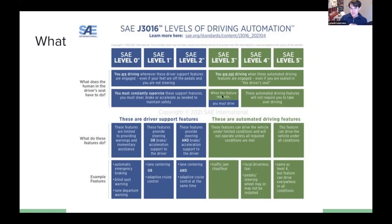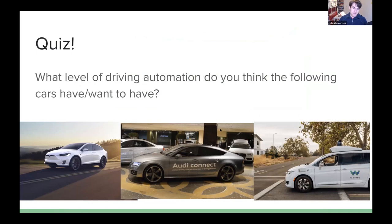Then there's level three, from where you're not responsible anymore — you can go read a book. Sometimes the car might say it doesn't know what to do and you must take over. In levels three and four there are limited conditions in which you can drive, such as limited to specific highways or traffic jams. In level four, there's never any moment where you have to intervene and take over the steering wheel. So after hearing this, I've got a quiz — what level of driving automation do the following cars have?